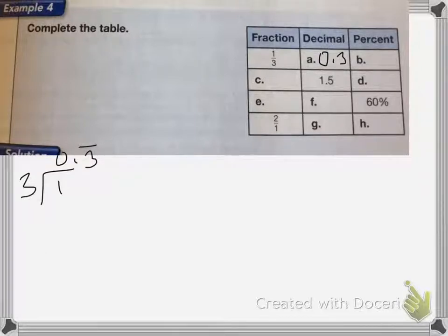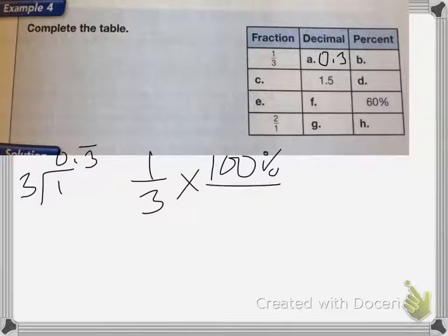And then as a percent, I'm going to take one-third, multiply it by 100%, which equals 33 and one-third percent.